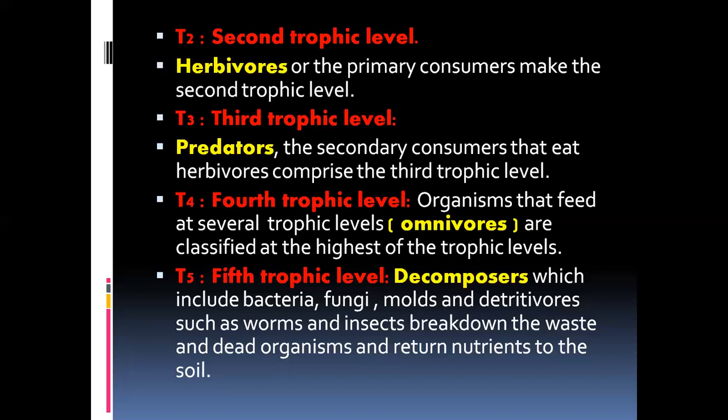These trophic levels are the feeding stages, and one trophic level is related to the next. T1 is related to T2, T2 is related to T3, T4, and T5 — all interconnected. Energy transformations take place between these feeding levels: producers' energy is transferred to herbivores, herbivores' energy to predators, predators' energy to omnivores, and finally decomposers release energy from dead organic matter back into the environment.